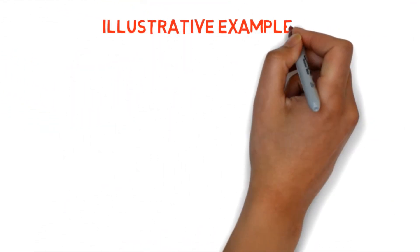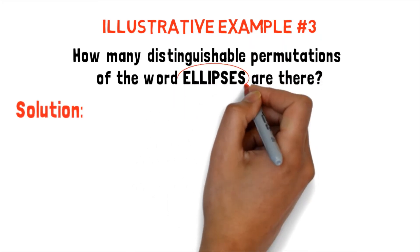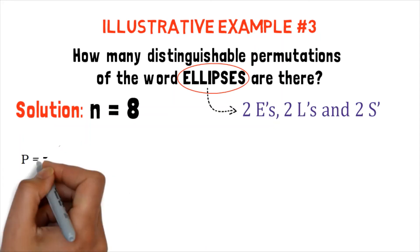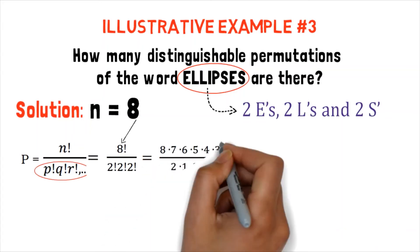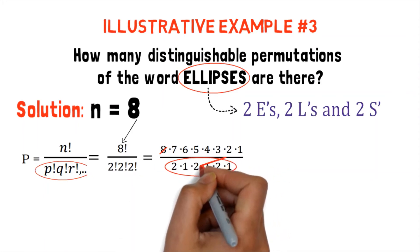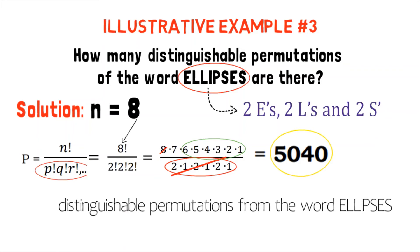Illustrative example number 3: How many distinguishable permutations of the word ELLIPSES are there? Since the word ELLIPSES consists of 8 letters, n equals 8. In the word, there are 2 E's, 2 L's, and 2 S's. Using the formula for distinguishable permutations, P equals n factorial divided by p factorial times q factorial times r factorial, we have 8 factorial divided by 2 factorial times 2 factorial times 2 factorial. Since the product of the denominator equals 8, we cancel 8 in the numerator with the denominator, and multiplying the remaining numbers gives 5,040. So there are 5,040 distinguishable permutations of the word ELLIPSES.